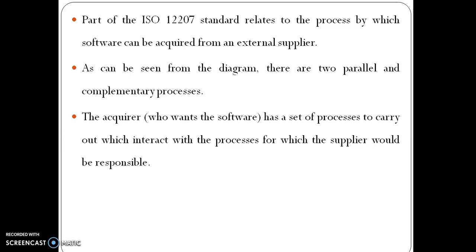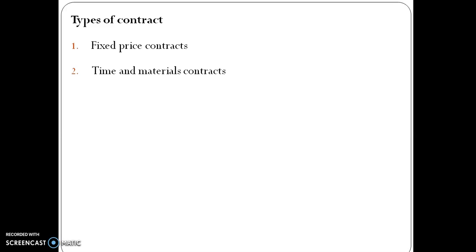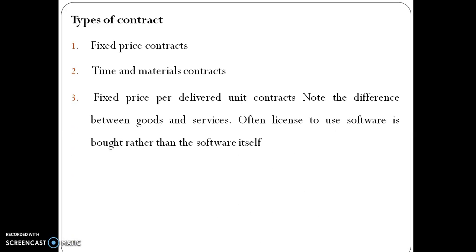Types of contract include: fixed price contracts, time and materials contracts, and fixed price per delivered unit contracts. Note the difference between goods and services — often the license to use software is purchased rather than the software itself.